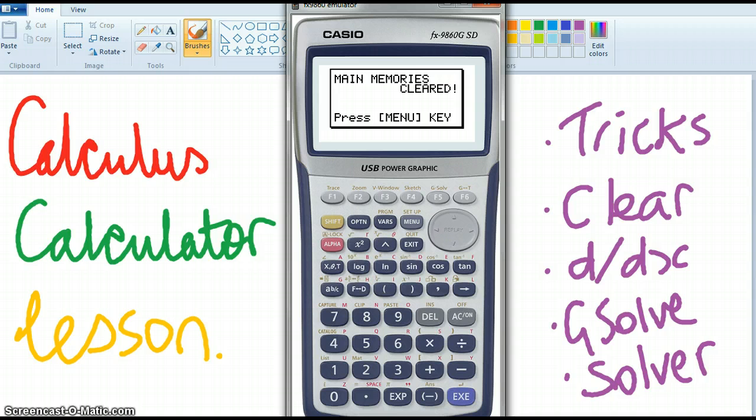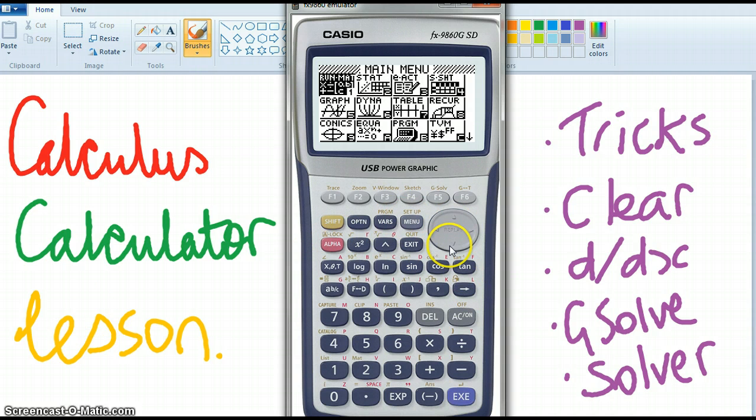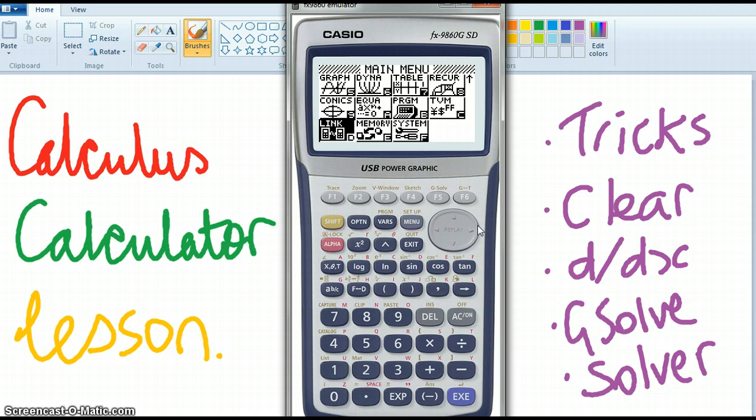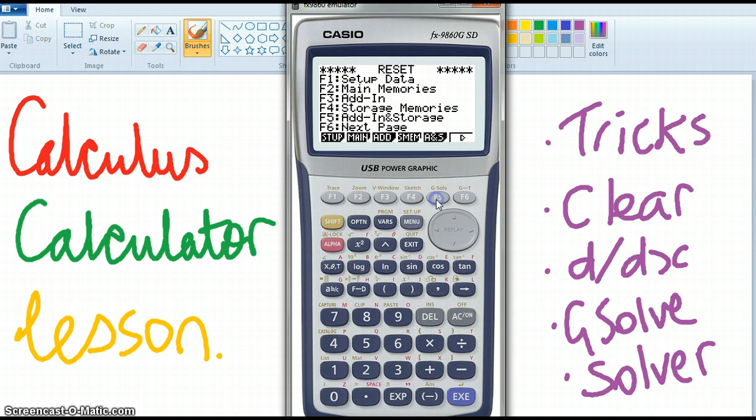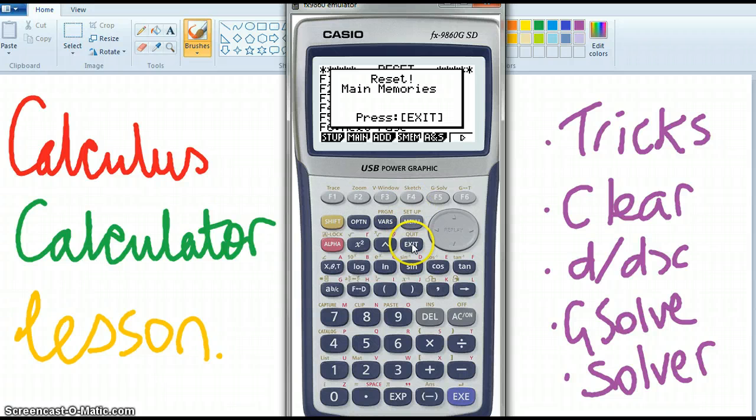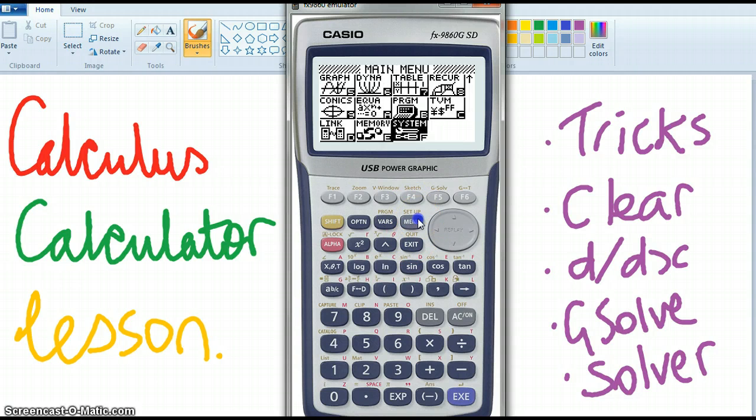So the first thing we're going to do is learn how to clear the calculator. We go to our menu and you can click along with me, and you go system. F5 is reset and F2 is main memories and F1 is reset the main memories. So you need to do that at the start of any exercise, any exam and it will put it back to radians normally.